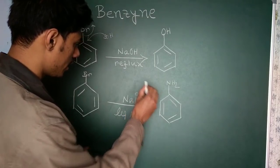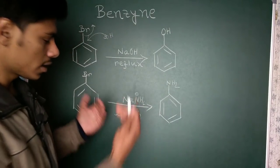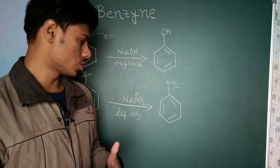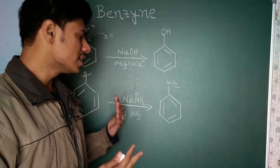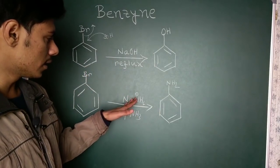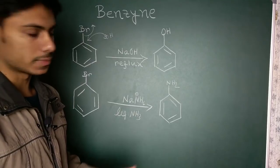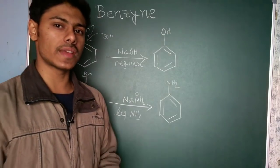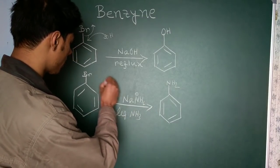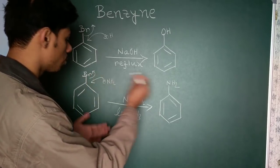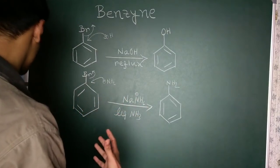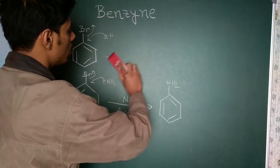The same reaction can be done with slightly different conditions: sodium amide (NH2 minus) in liquid ammonia. Liquid ammonia has a very low boiling point, so you can guess it needs low temperature. The question is: how does this reaction occur? Does NH2 minus directly attack and Br minus leave — or does it involve some other mechanism? That is the topic of today.